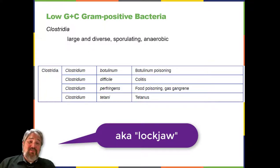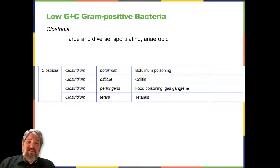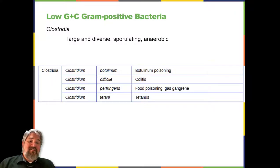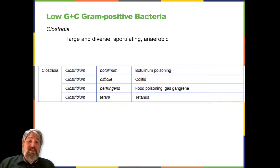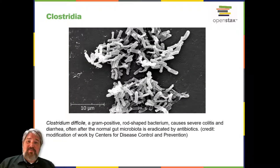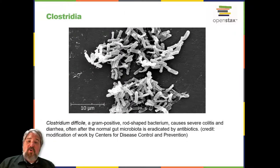Clostridium botulinum produces botulinum neurotoxin, the most lethal biological toxin known. Botulinum toxin is responsible for rare but frequently fatal cases of botulism. The toxin blocks the release of acetylcholine in neuromuscular junctions, causing flaccid paralysis. In very small concentrations, botulinum toxin has been used to treat muscle pathologies in humans and in a cosmetic procedure to eliminate wrinkles. Clostridium difficile is a common source of hospital-acquired infections that can result in serious and even fatal cases of colitis, inflammation of the large intestine. Infections often occur in patients who are immunosuppressed or undergoing antibiotic therapy that can alter the normal microbiota of the gastrointestinal tract.